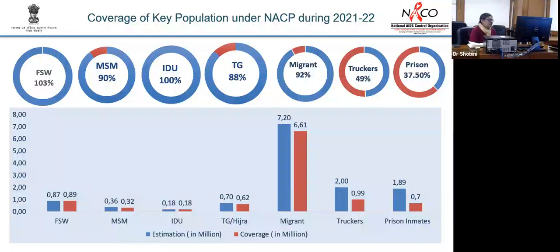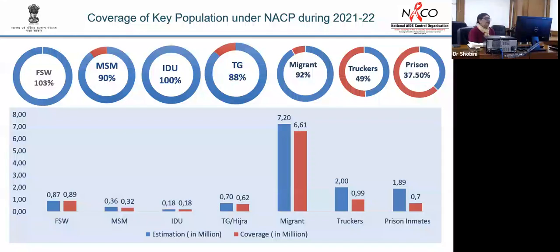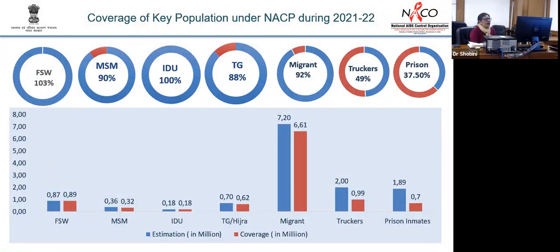In terms of coverage, close to almost 100% of female sex workers contracted under these projects are being covered, 90% of men having sex with men, 100% of injecting drug users, and 88% of transgender persons — but more ground needs to be covered for truckers and prison interventions. The program is being redesigned to revamp the bridge population interventions.